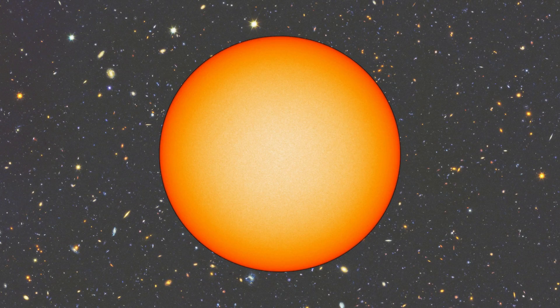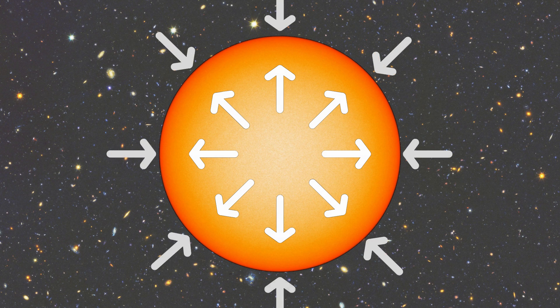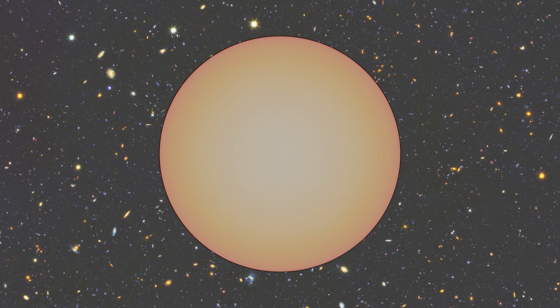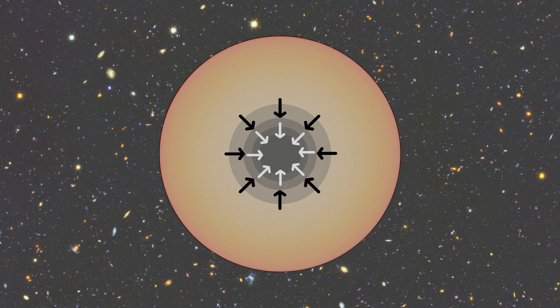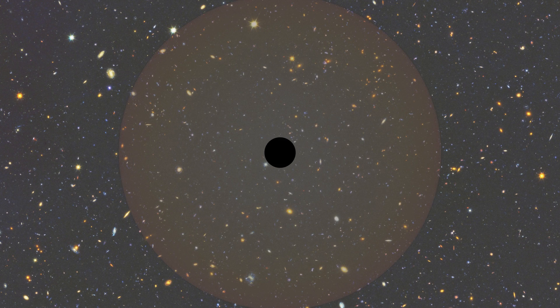Now the next question would be: how can such an object come to be? One possible explanation is during the end of the life of a star. Imagine a huge massive star. Normally inside a star, the huge pressure outwards due to nuclear reactions is balanced by the huge gravitational pressure inwards. But at the end of its life, it burns out all its nuclear fuel. The inner matter collapses into a core and the outer layer explodes. This is known as a supernova explosion.